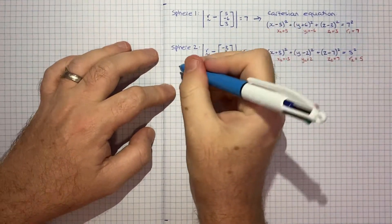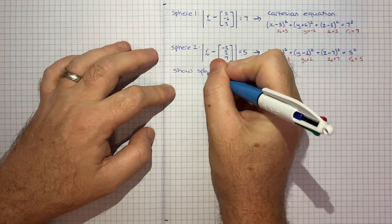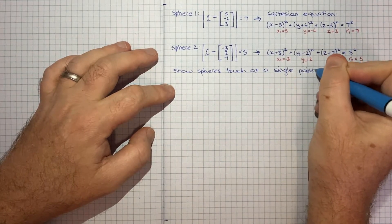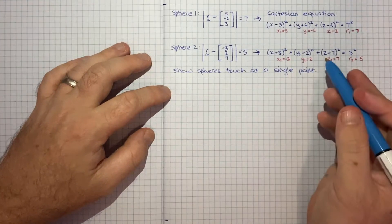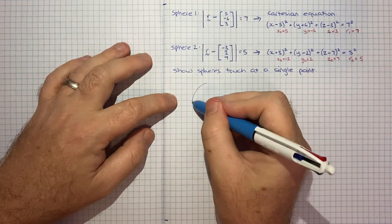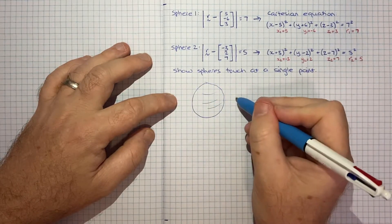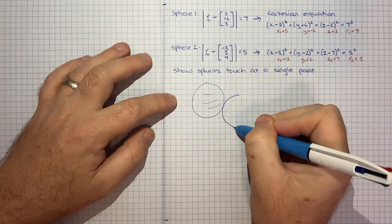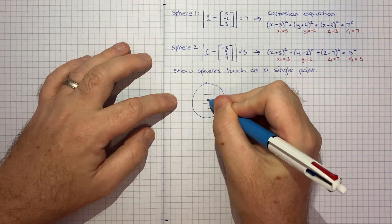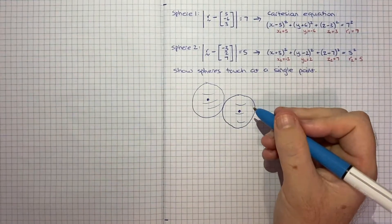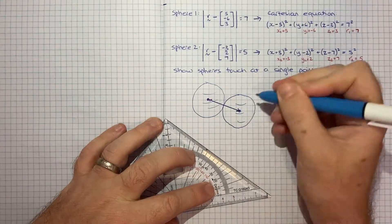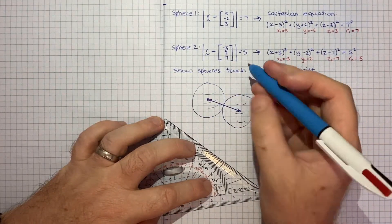We're being asked to show that the spheres touch at a single point. The way I'm going to go about this is to make use of the fact that if you had two spheres, maybe I'll just draw sphere 1 and another sphere that's just touching at a single point. If I took the center of the first sphere and the center of the second sphere and join those up, I'll call that distance d.